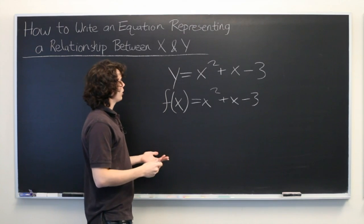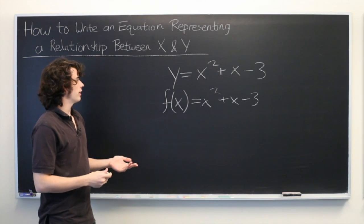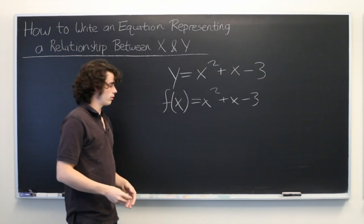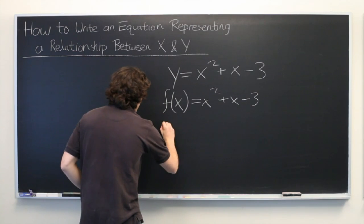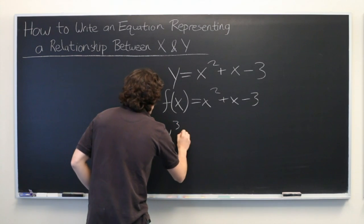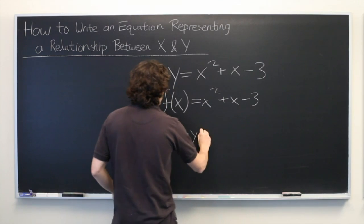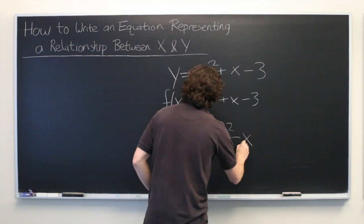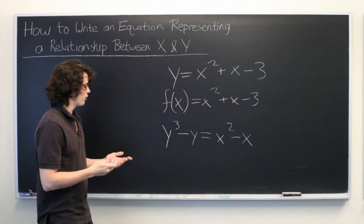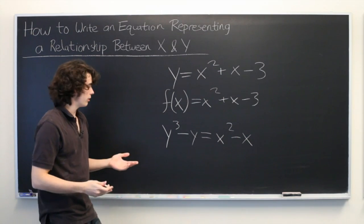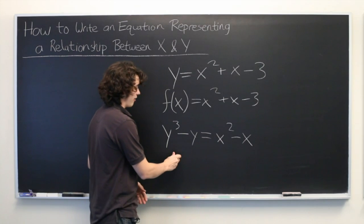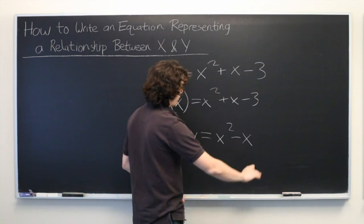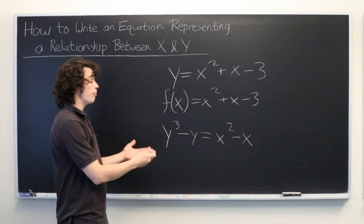However, there are relationships between variables that cannot be explicitly written as functions. One example might be y cubed minus y equals x squared minus x. It is fundamentally not possible to write this with y on the left by itself and then x on the right. This is known as an implicit relationship.